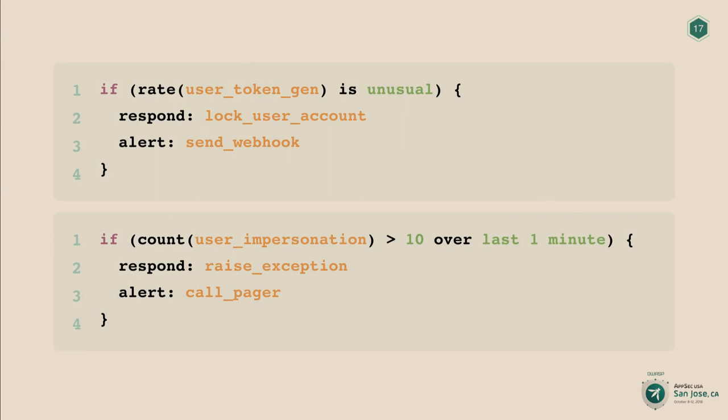We have these four items in our toolbox and we need to architect them — we need a way to drive them conjointly. Using any streaming engine, we can quite easily express high-level logic such as: if the rate of the user token generation function is unusual, then log the user account and send an alert webhook. Or: if the number of calls to a user impersonation function exceeds 10 in one minute, raise an exception and call a pager.